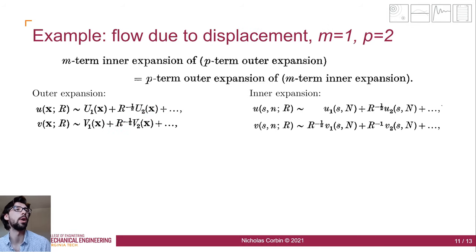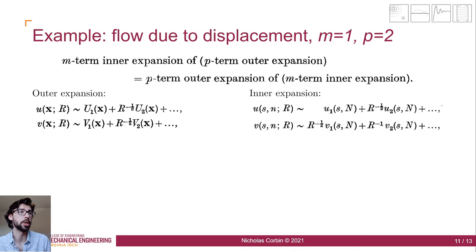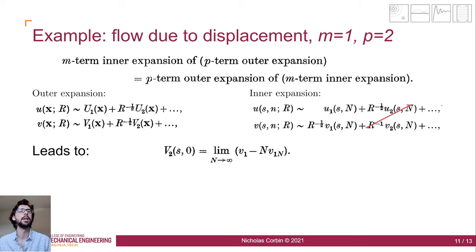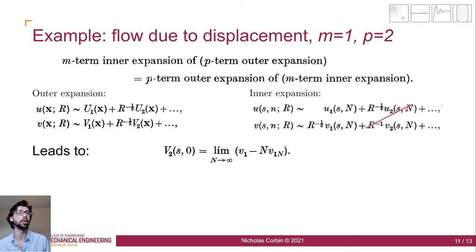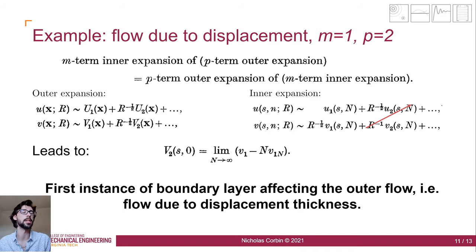If we consider instead the case for m equal to 1 and p equal to 2, here instead of taking only the first term from both expansions, we take both terms from the outer expansion but only one term from the inner expansion. Carrying out the same procedure, the matching condition we obtain has a very nice physical interpretation: the vertical component of the outer flow solution at the surface looks like a series of sources distributed along the surface of the body. This is essentially the flow due to displacement thickness — as mentioned earlier, the displacement due to the boundary layer produces a flow upwards out of the boundary layer into the outer flow, and this matching condition captures that effect. This is the first instance where we see the boundary layer flow affecting the outer flow.